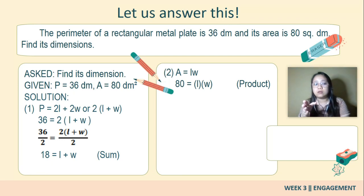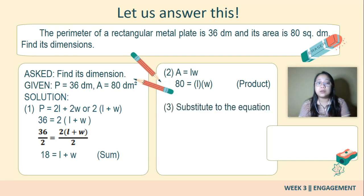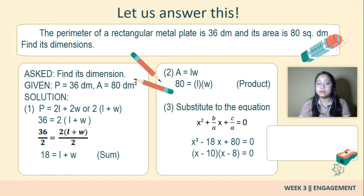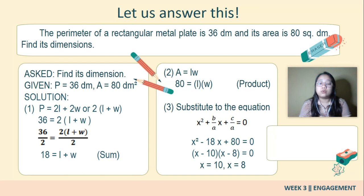Using the perimeter formula: 2 times (L plus W) equals 36. Substituting and dividing both sides by 2 gives L plus W equals 18, which we consider as the sum. For the area: length times width equals 80, which we consider as the product. Substituting into the equation form x squared minus 18x plus 80 equals zero. By factoring we get (x minus 10)(x minus 8) equals zero. Using the zero product property we get positive 10 and positive 8.